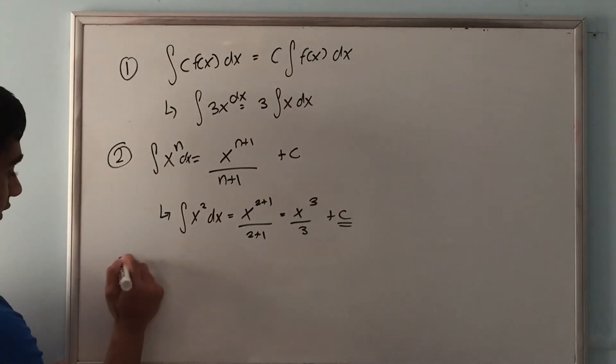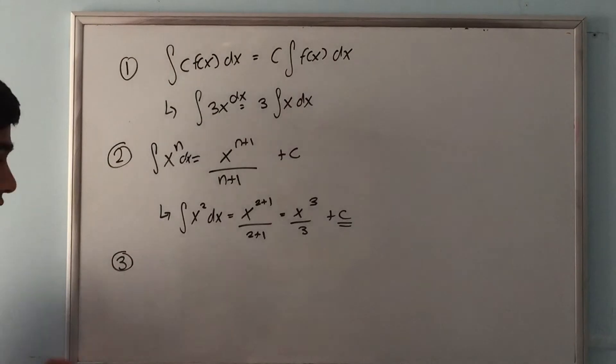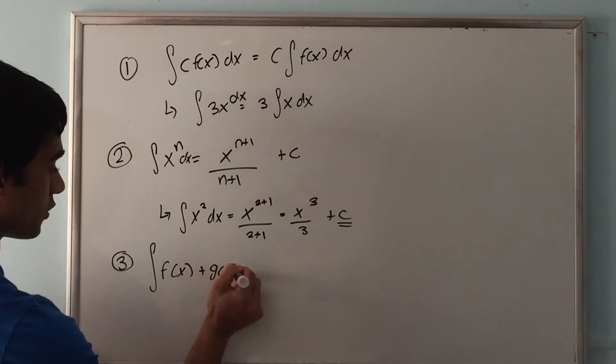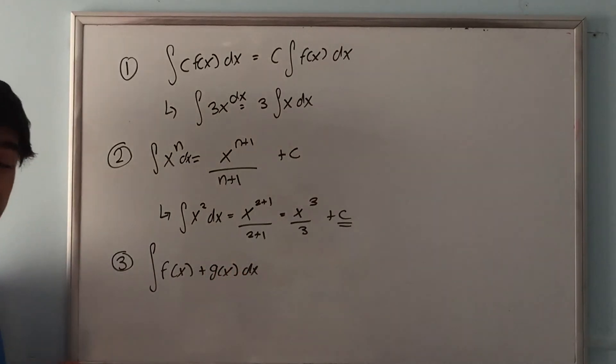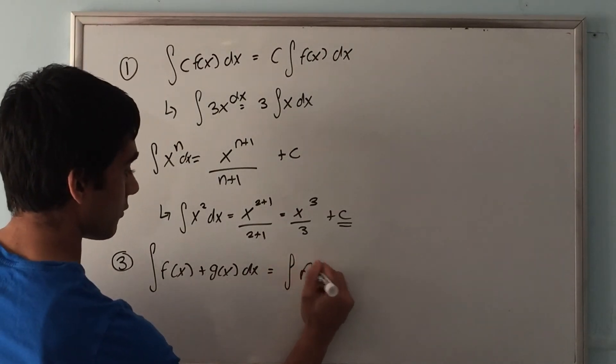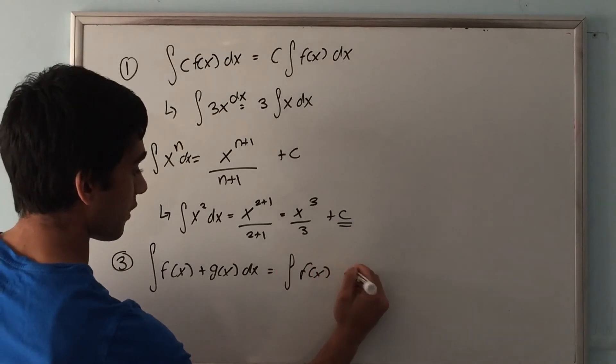The next rule is the addition rule, which basically says if you want to take the integral of two functions added to each other, it's pretty easy. You can take the integral of each separate function and add them together. So this equals the integral of f of x plus the integral of g of x.